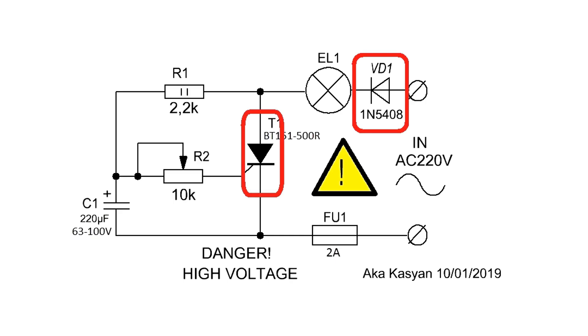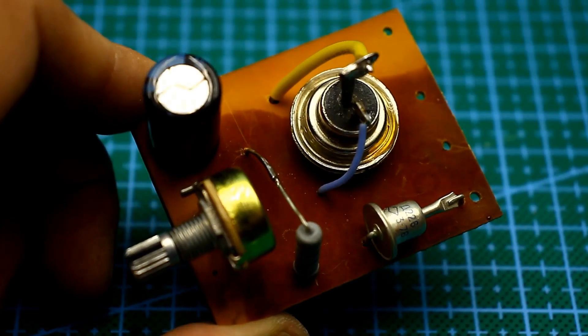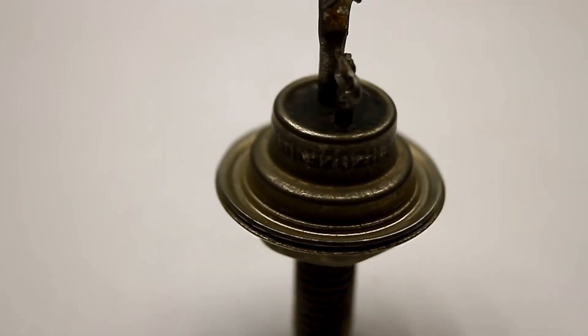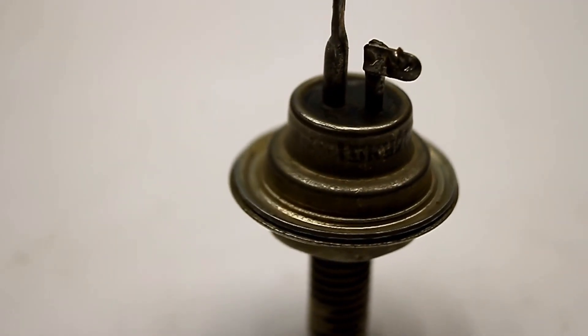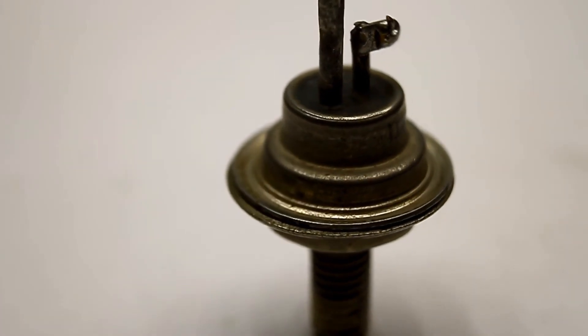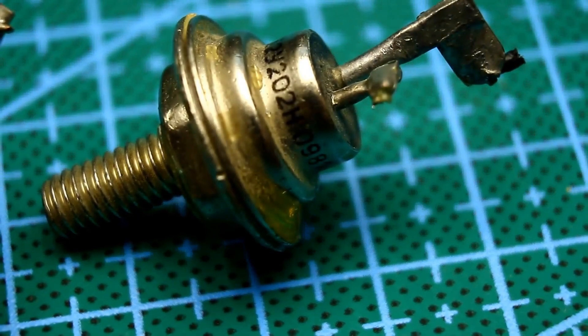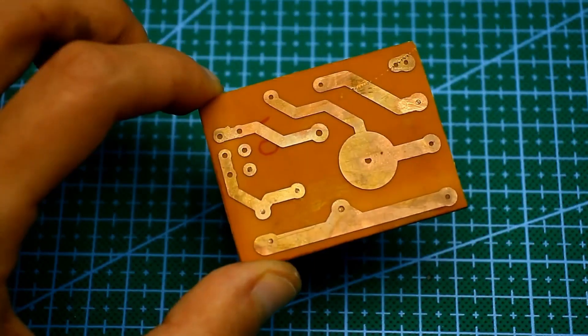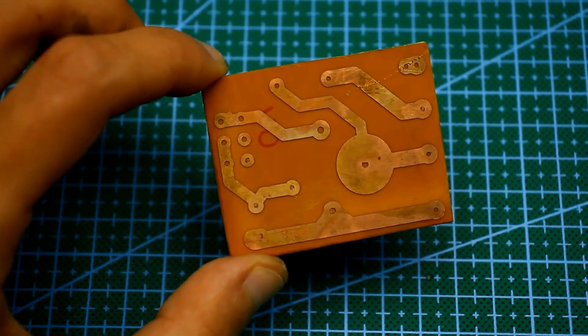Rectifier diode and thyristor, it's advisable to choose ones rated at 300 to 400 volts to have a voltage margin. The thyristor in my case is made in the USSR, a 10 amp Q202 with an N index. Although there was no point in using it, it was simply available.